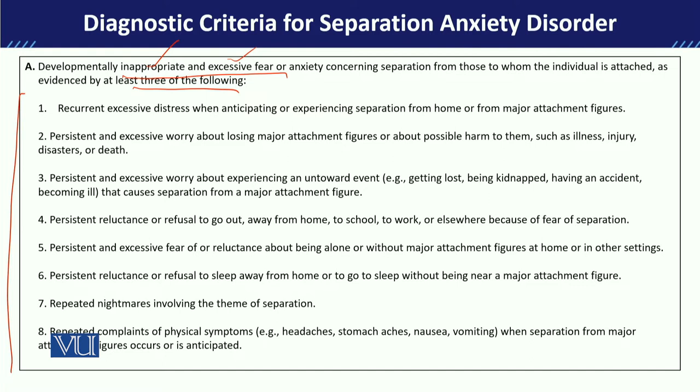Number one: the child has recurrent or excessive distress when anticipating or experiencing separation from parents, major attachment figures, or their home. Those who are emotionally attached to parents or home experience anticipatory separation anxiety when separated from them.